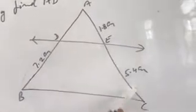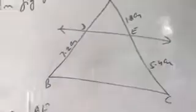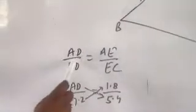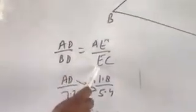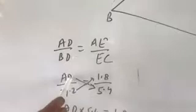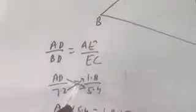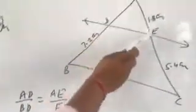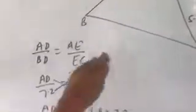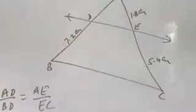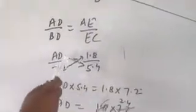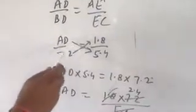We know that AD upon BD equal to AE upon EC. AD upon BD, BD equal to 7.2 centimeter, equal to AE, AE equal to 1.8 centimeter, EC equal to 5.4 centimeter. By cross multiplication, AD into 5.4.